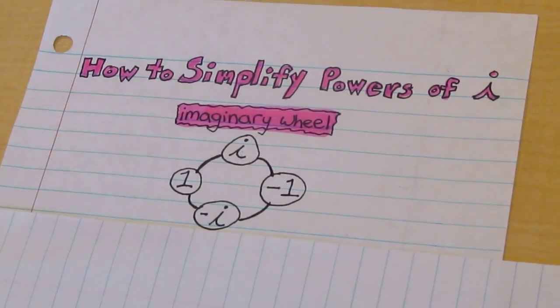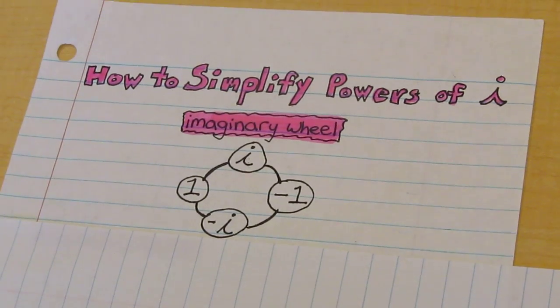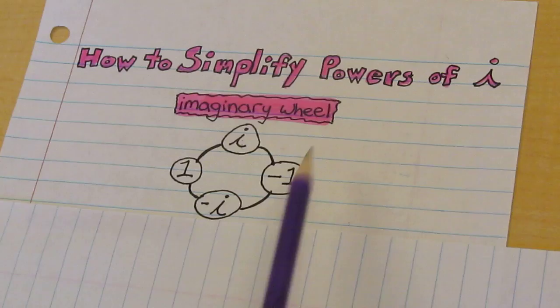How to simplify powers of i. To do this we use what is called the imaginary wheel. You always start at the top and move clockwise. So we're going to start at i and move this way.